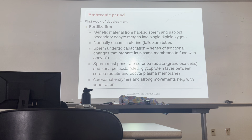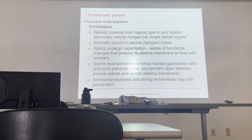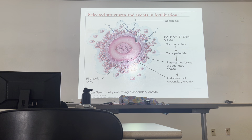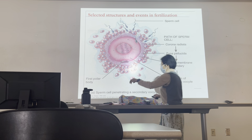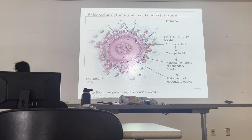Fertilization is where the sperm and the egg meet — specifically the secondary oocyte and the sperm. Let's review our meiosis. For the female, all of our eggs are arrested at prophase I / metaphase I. When you are born, all of the eggs are at prophase I / metaphase I, meaning there are 96 chromosomes total — 46 from the set you inherited from your mom and 46 from your dad.